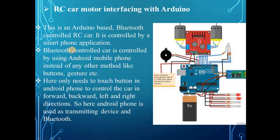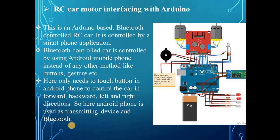The next interfacing is RC car motor with Arduino. This is an Arduino-based Bluetooth-controlled RC car, controlled by a smartphone application. The Bluetooth control car is controlled using an Android mobile phone — it only requires touching buttons in the Android phone to control the car in forward, backward, left, and right directions. The Android phone acts as the transmitting device, and the figure on the right shows the interfacing of the RC car motor with Arduino.